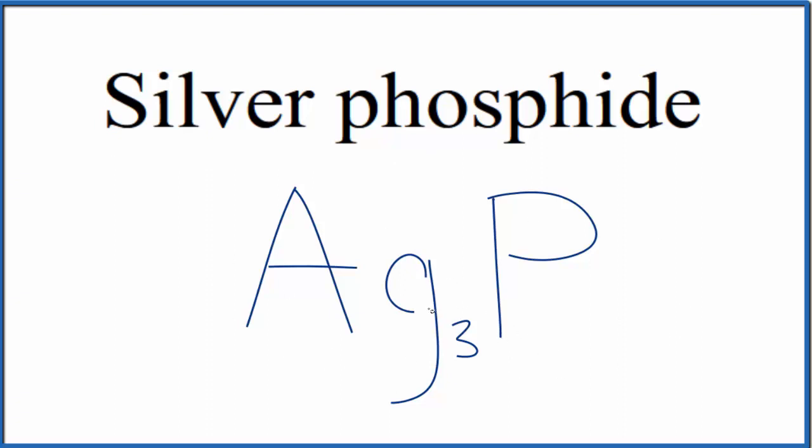If you were to write the name based on the formula, sometimes you'll see people call this silver one phosphide because it has this one plus ionic charge. But since it's almost always one plus, you can probably just leave it as silver phosphide.